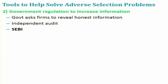In this case, what government can do is ask firms to reveal honest information. Government can ask firms to publish information about their balance sheet through an independent audit. Whatever information about a firm is required, government agencies can ask firms to reveal it and make it compulsory that they undergo an independent audit and reveal all this information to the general public. For example, in the US the Securities and Exchange Commission is the government agency that requires firms selling their securities to undergo independent audits in which accounting firms certify that the firm is adhering to standard accounting practices.